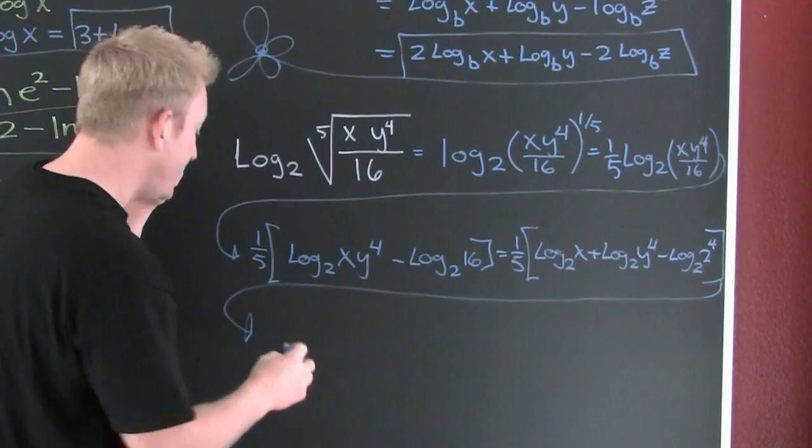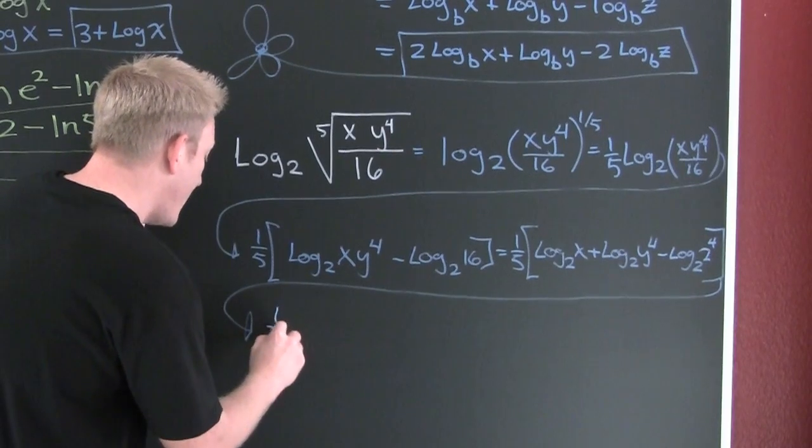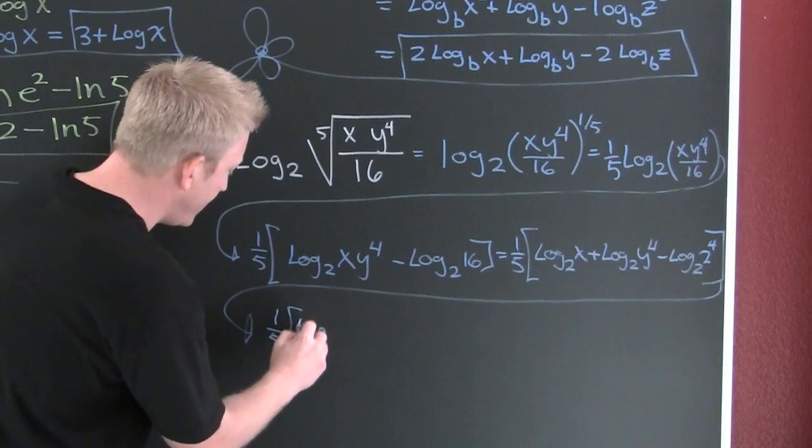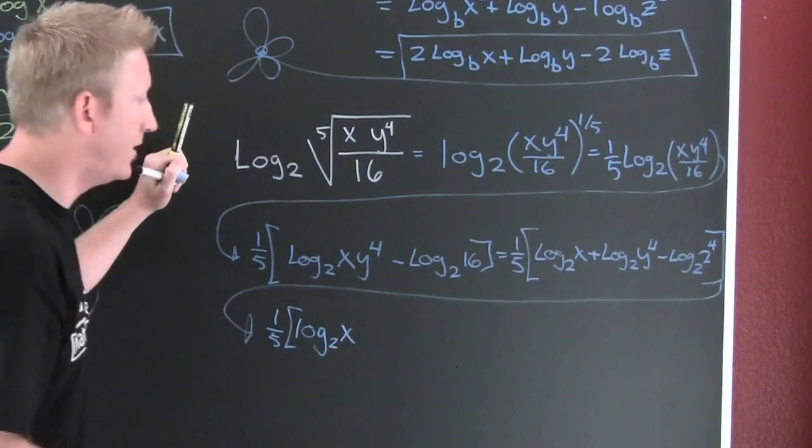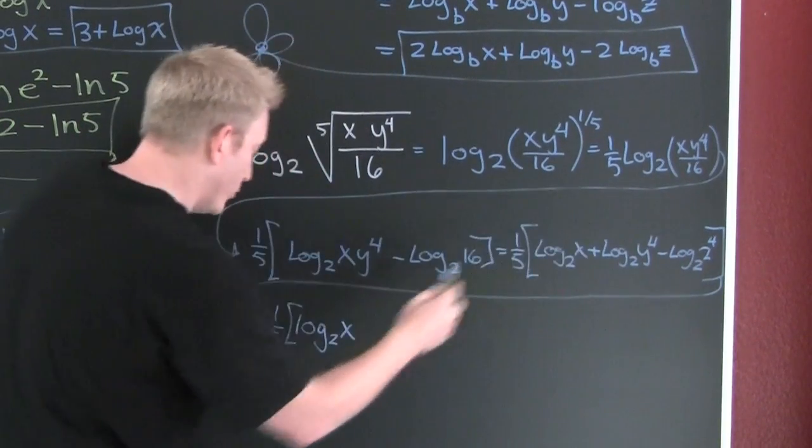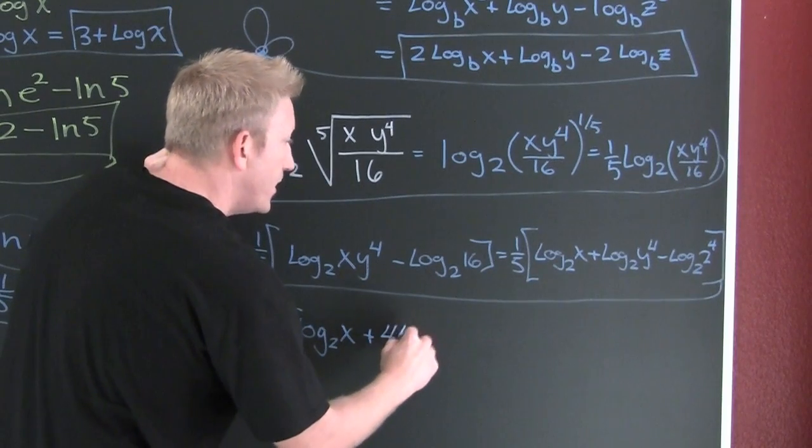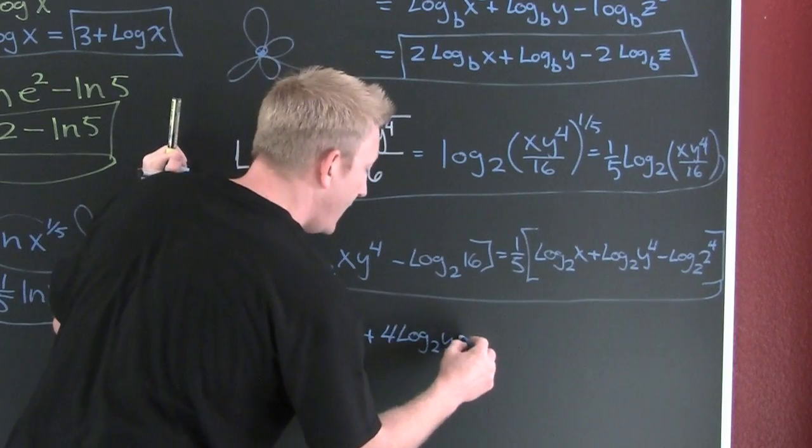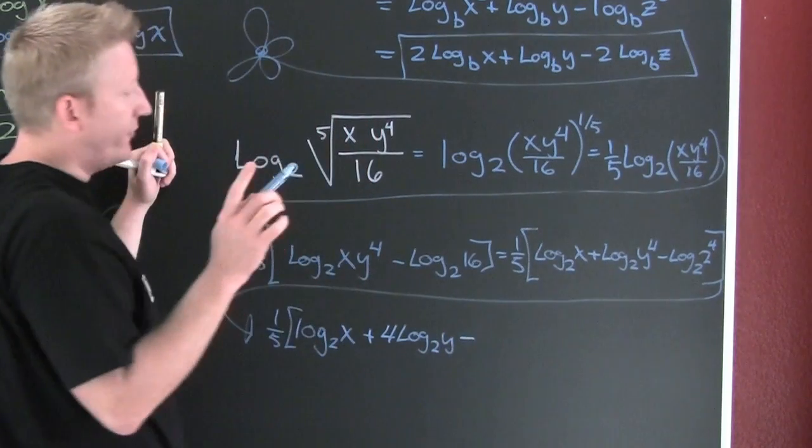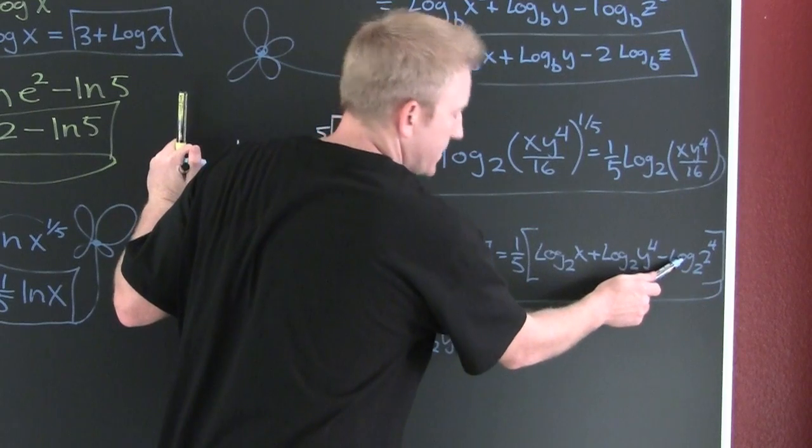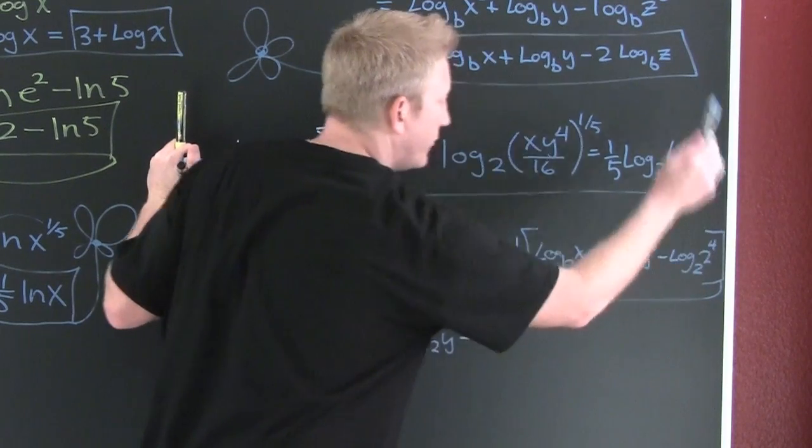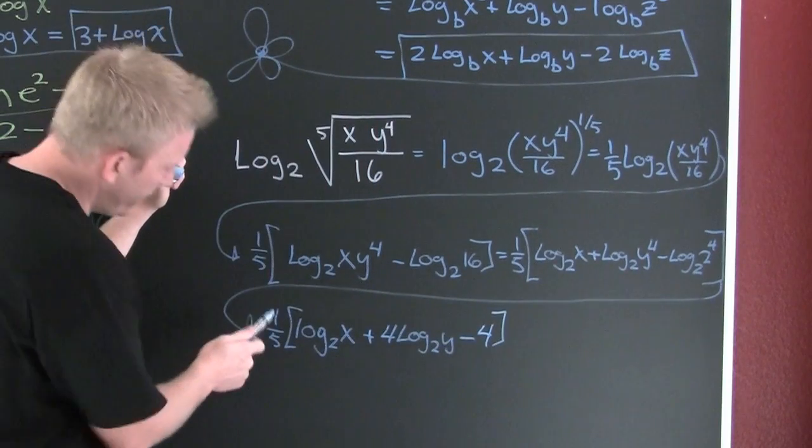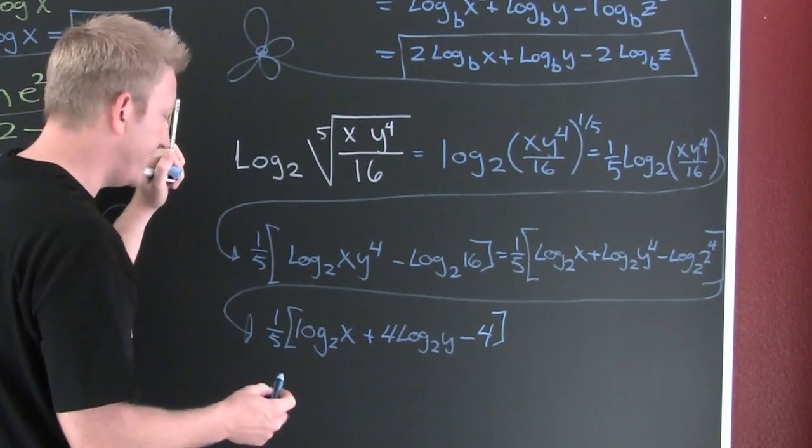So here we go, we're almost done. We have 1 5th of log base 2 of x. Now I see I can bring that 4 down front, plus 4 log base 2 of y. Minus, wait for it, that's one of my special properties. Log base 2 of 2 to the 4 is 4. But wait, there's more. Finish him. Distribute in that 1 5th.